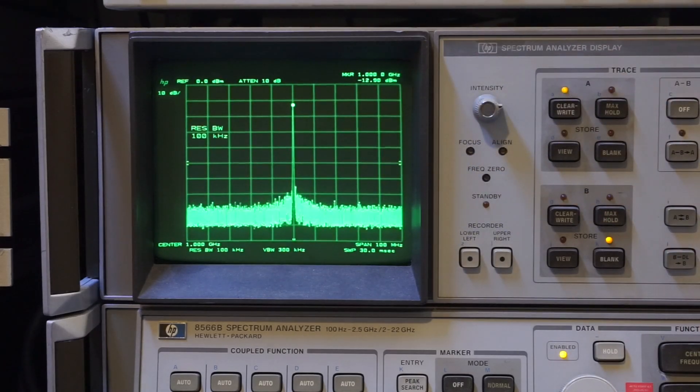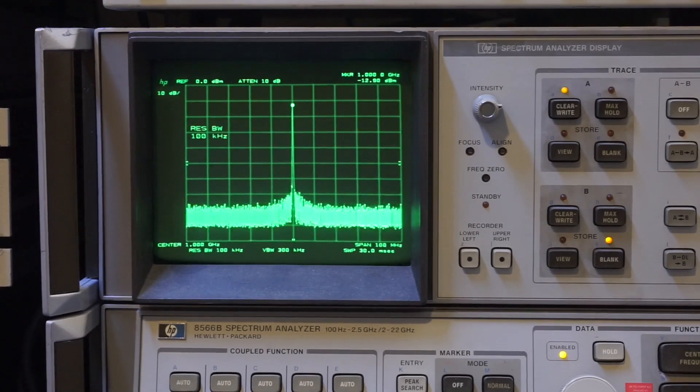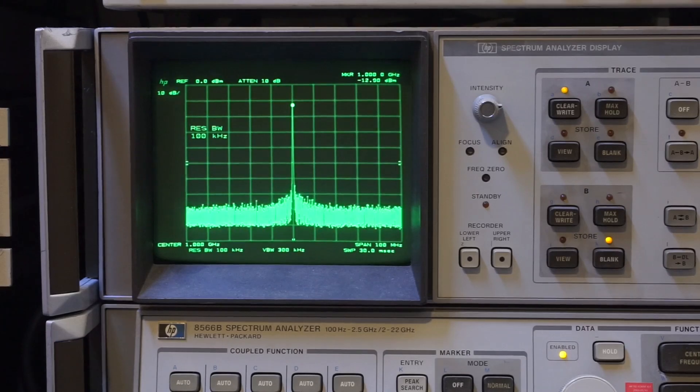As you can see, we're measuring exactly 1 GHz. So we know the output from the NanoVNA is actually very accurate, and we can confirm there is no issue with the NanoVNA's RF synthesizer.